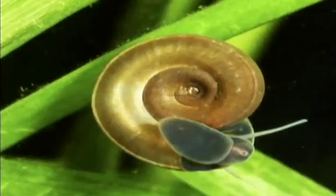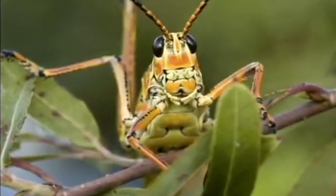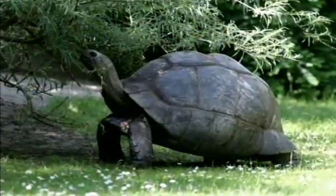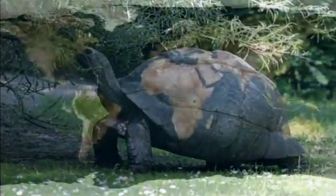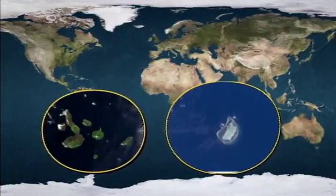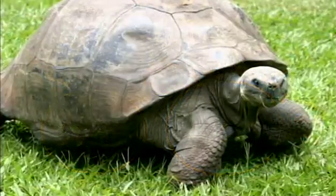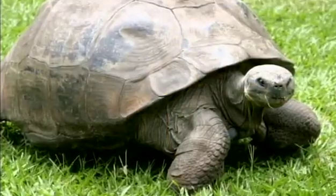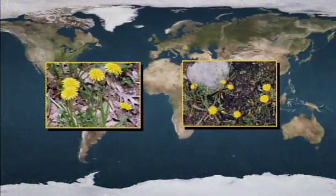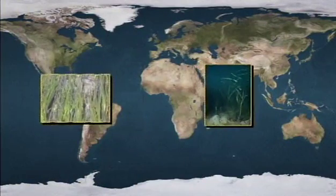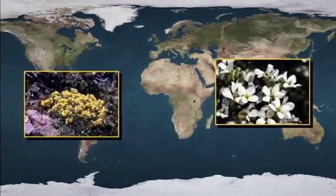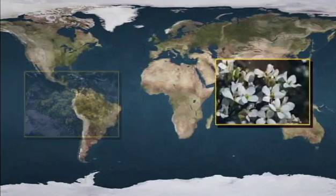The distribution of wildlife poses some puzzles for modern biologists. Why do we find giant land tortoises on islands in the Pacific Ocean and 10,000 miles away in the Indian Ocean, but nowhere in between? Why do we find identical plants on either side of the Atlantic Ocean? These kinds of disjunct, or split, ranges can't be explained by the way organisms travel and live in the present.